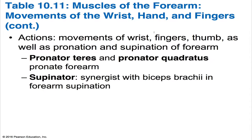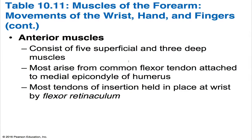Anterior muscles are flexors and insert via the flexor retinaculum; posterior muscles are extensors and insert via the extensor retinaculum. Most flexors in the anterior compartment arise from a common tendon on the humerus and are innervated largely by the median nerve. Two anterior compartment muscles are not flexors but pronators: the pronator teres and the pronator quadratus. Muscles of the posterior compartment extend the wrist and fingers, with one exception — the supinator, which assists the biceps brachii in supinating the forearm. Of the eight muscles in the anterior compartment, five are superficial and three are deep.